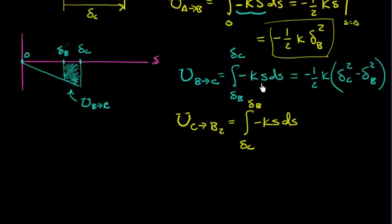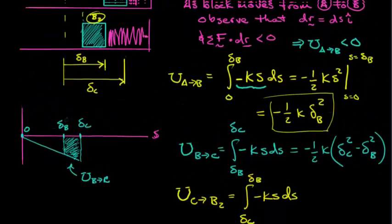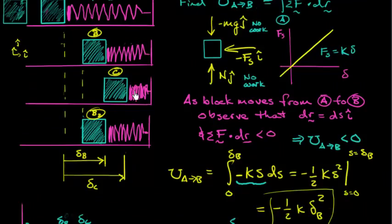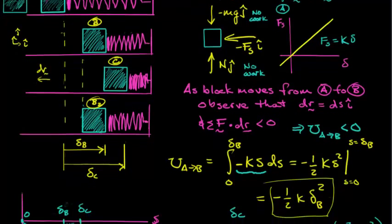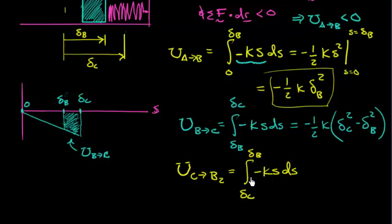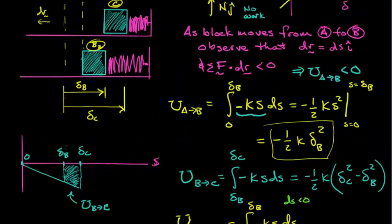Yeah, and you might wonder, well, why is it the same thing? Now that I'm going back, don't I have a positive work now? And the answer is yes, absolutely. Remember, throughout this entire thing, the spring is compressed. So the spring is pushing back towards the left on this thing. And over here, on the first two legs, from A to B and from B to C, the work was negative because the block was moving to the right and the force was to the left. Now, from C to B2, the force is still to the left, but now my dr is the opposite way. So I'm expecting a positive work out of this. So why do I have a minus ks? Well, look at my ds. I'm going from delta C to delta B. So the ds, each little increment in s is actually negative.